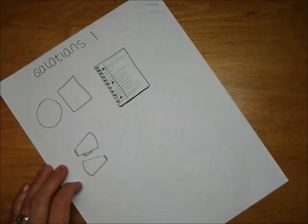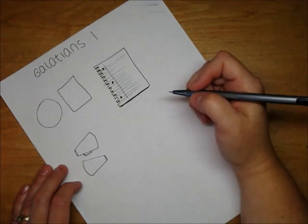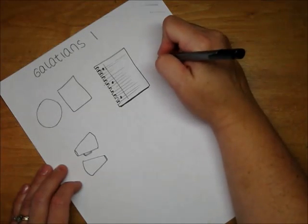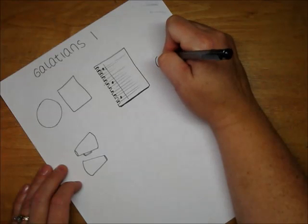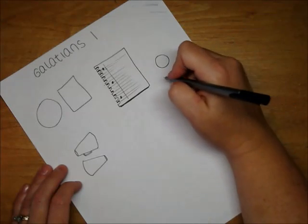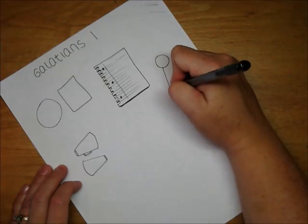We're also going to learn a lot about Paul in the book of Galatians, especially in Galatians 1 and 2. I'm going to have you draw Paul. How we're going to do that is we're going to draw a circle for his head and his bowling pin body.